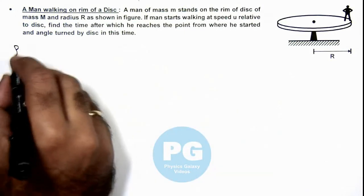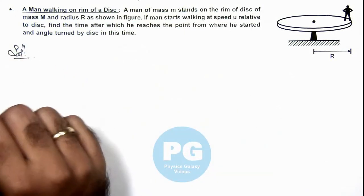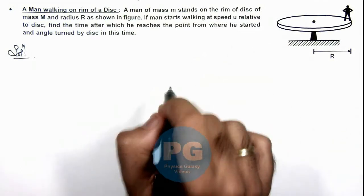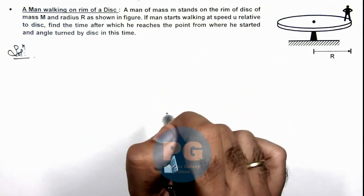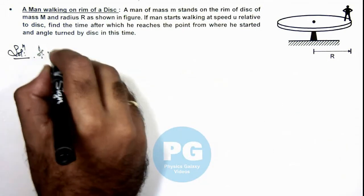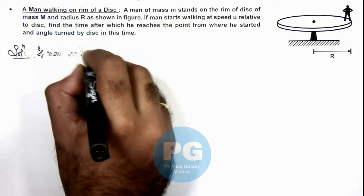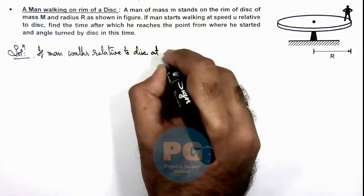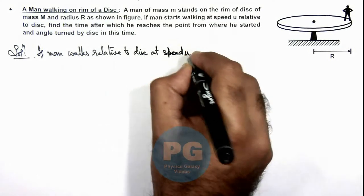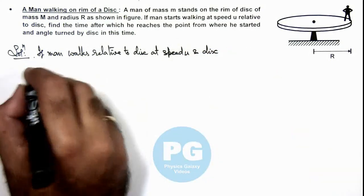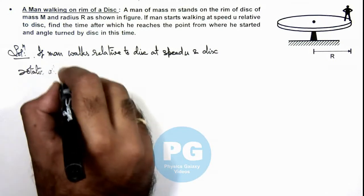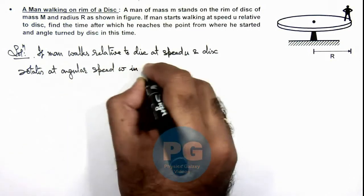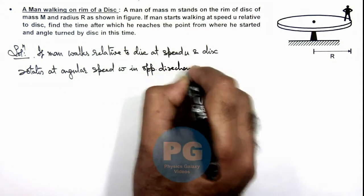Now in this situation, if the man starts walking with a speed u, then the disc will start rotating with an angular speed in the opposite direction to conserve angular momentum. So here we can write, if the man walks relative to the disc at speed u and the disc rotates at angular speed omega in the opposite direction.